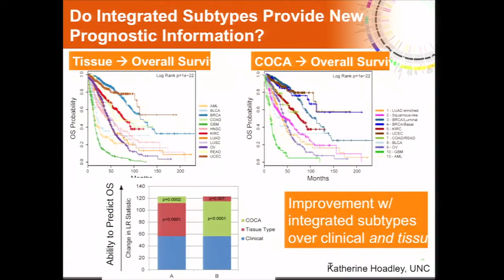You can ask: who cares about the subtypes? We looked at whether the COCA subtypes had clinical relevance. We already knew that tissue of origin defines different prognostic profiles in overall survival. Katie did an analysis stacking up predictive features: clinical data alone form a baseline, and you gain a lot more when you add either tissue type or the COCA subtype as a predictive feature. Importantly, the COCA subtype actually gives small but significant and independent information for defining survival groups, even beyond knowing tissue type and clinical features.